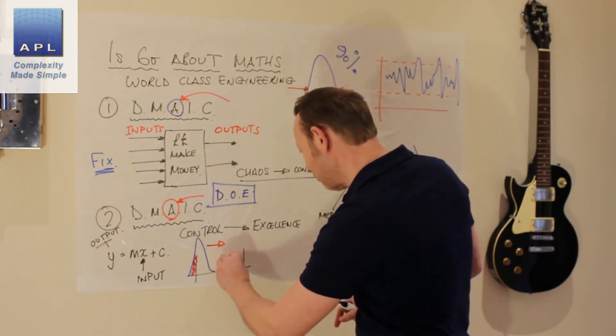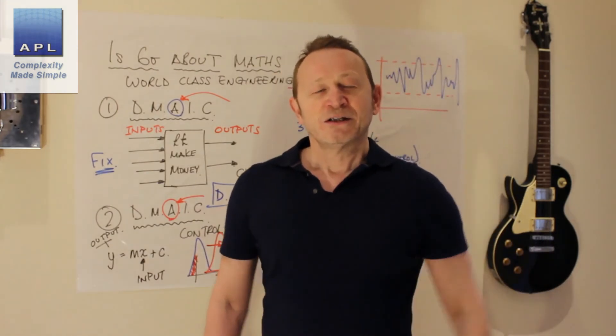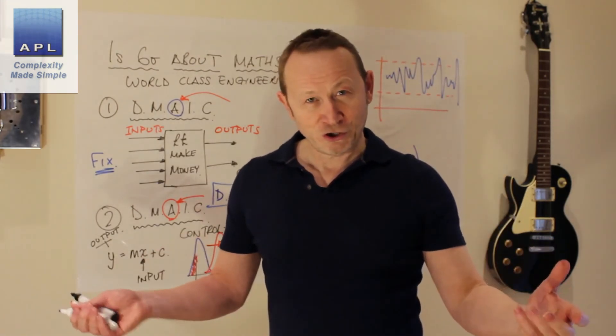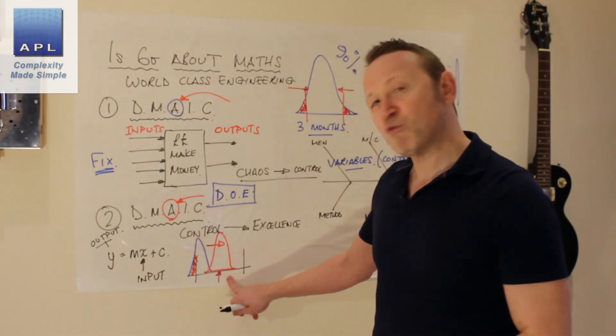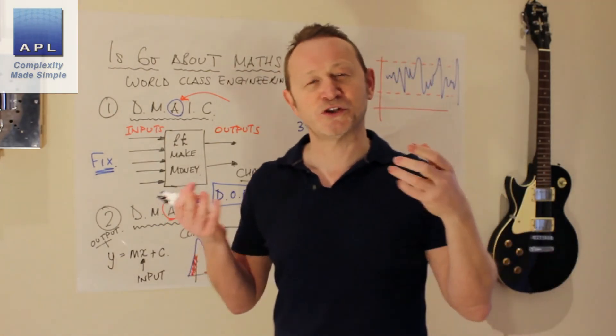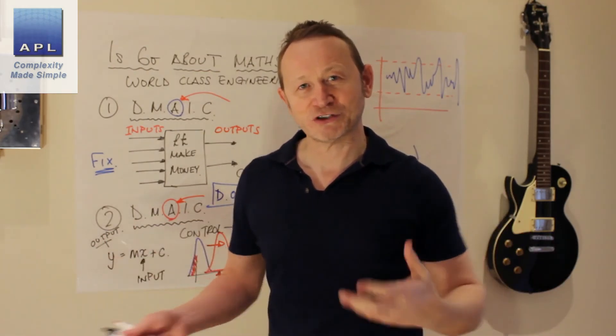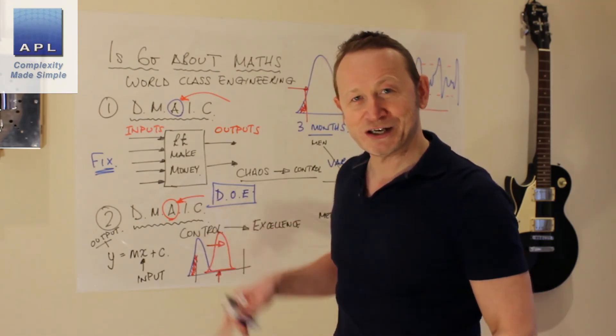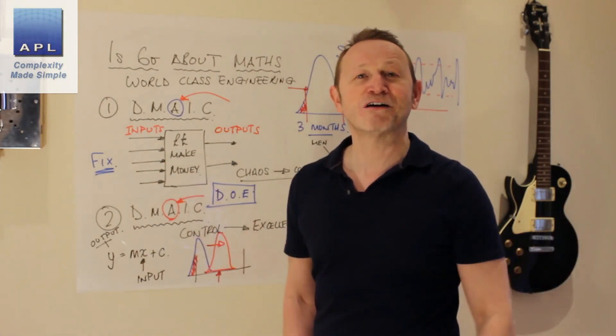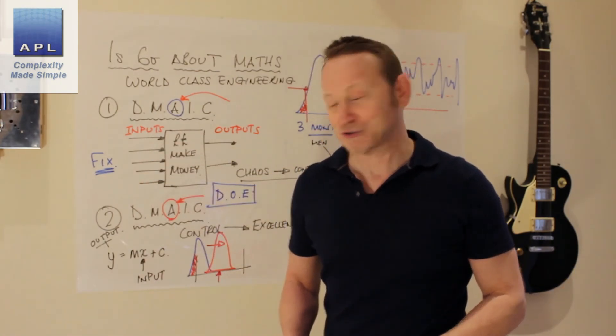So, for example, maybe your process is already sitting in control. Slap bang in the middle of the tolerance exactly where you want it. But unfortunately, you've got everything turned up full. Temperatures up full, speeds up full, pressures up full. But you'd love to hit this target with cheaper settings. Faster, better, lower energy, etc. Cheaper material maybe. D-O-E is brilliant at finding the cheapest settings in the complex world of millions and millions of combinations that could be over here on your inputs.